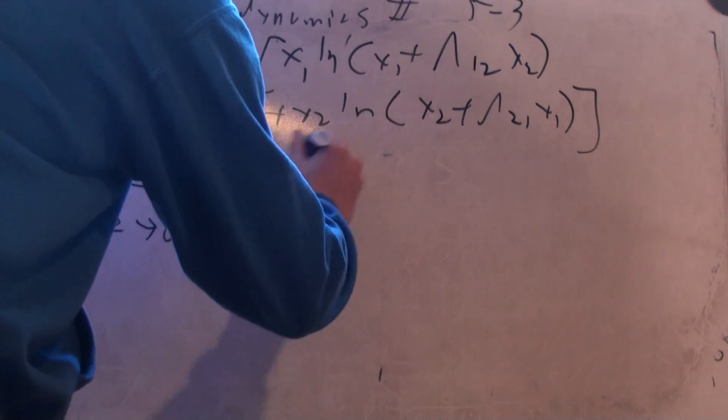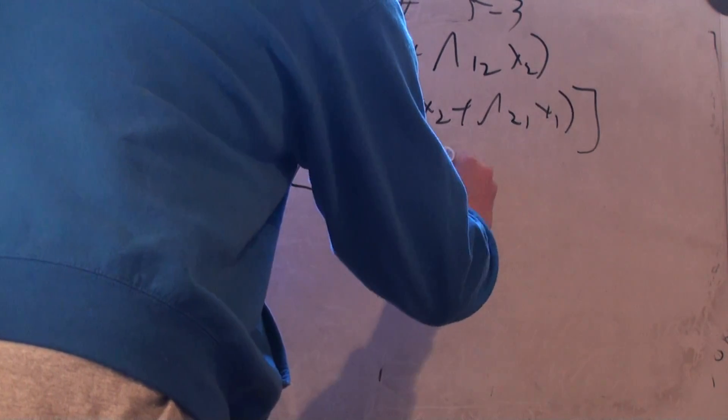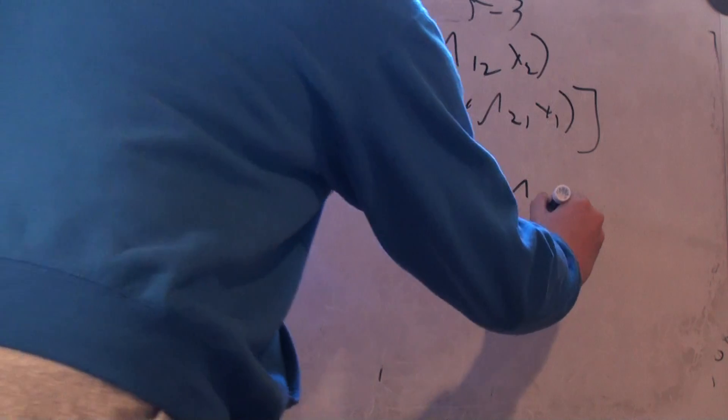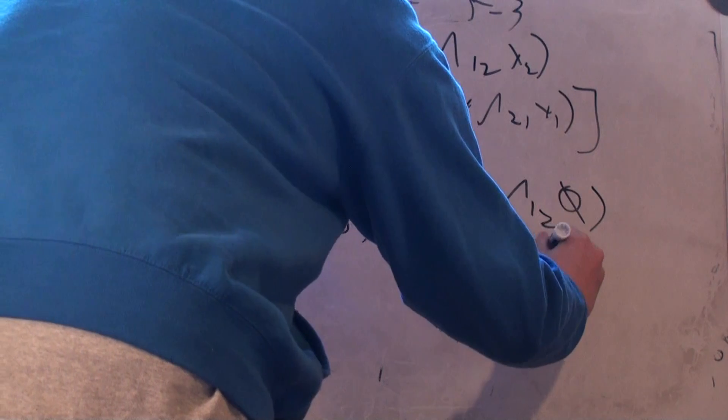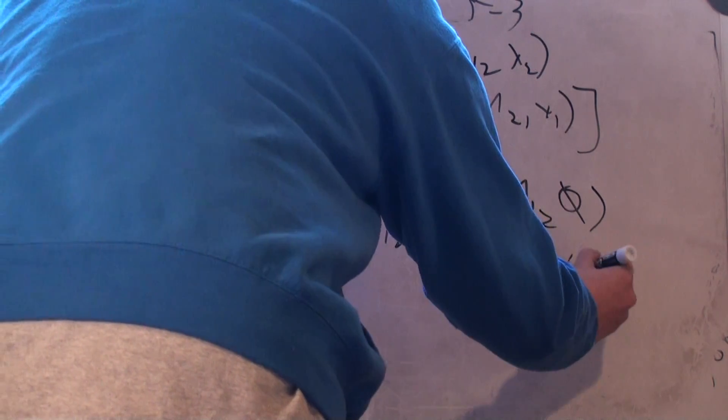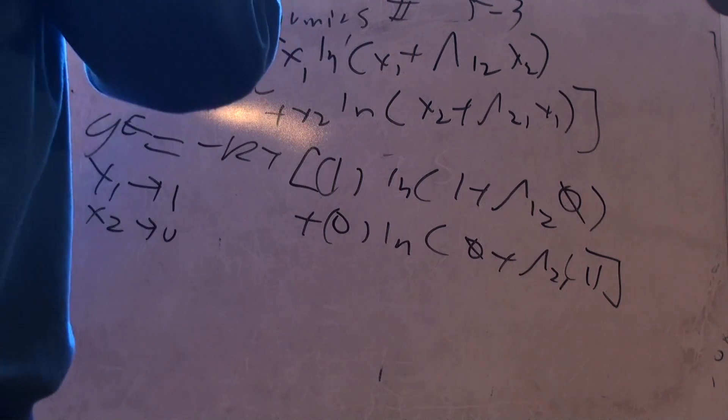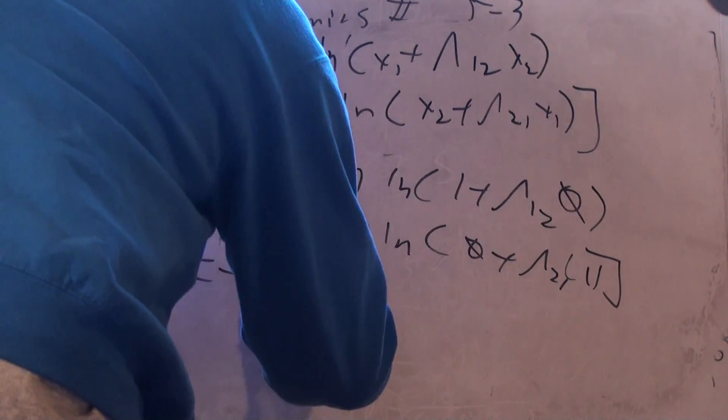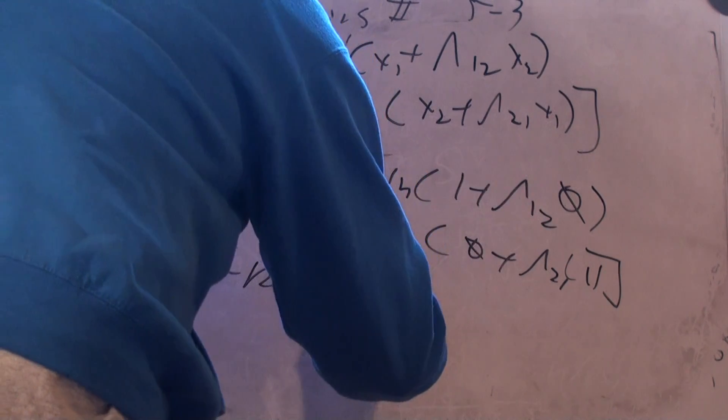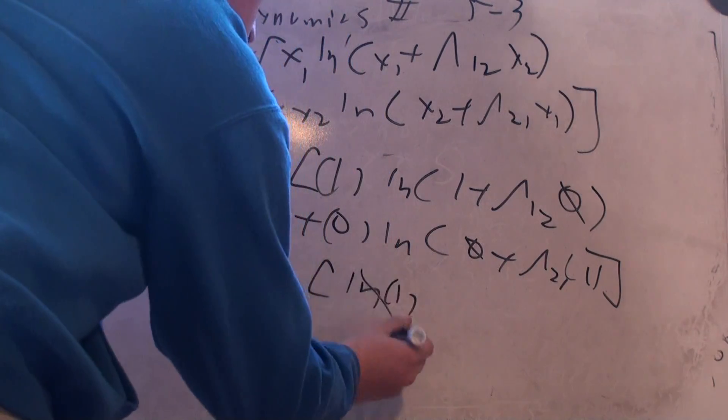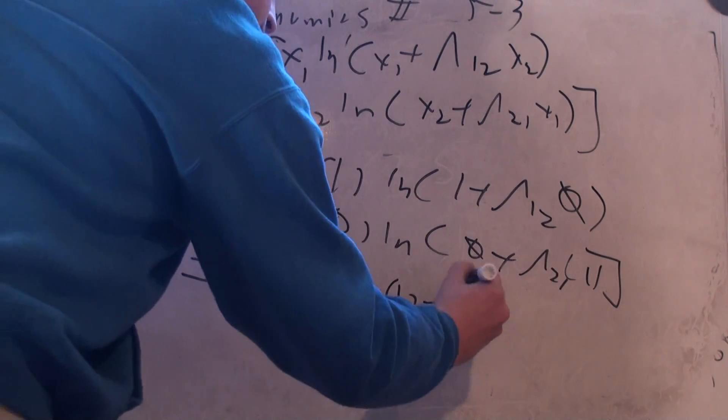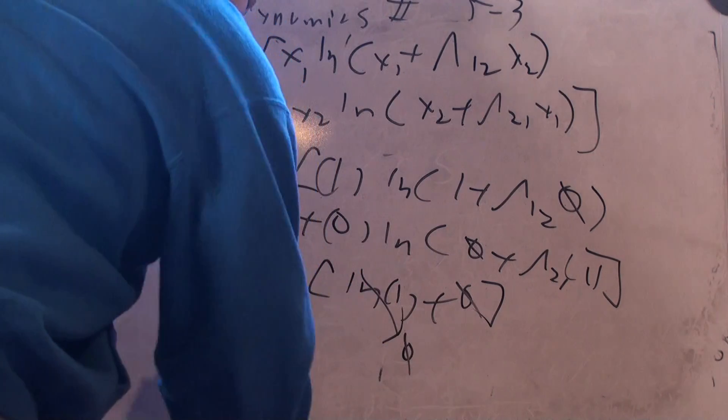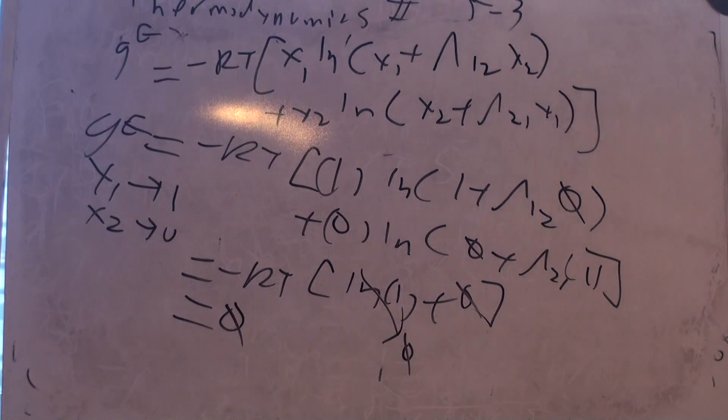Minus RT. So I've got 1 times natural log of 1 plus lambda 1,2 times 0, plus 0 times natural log of 0 plus lambda 2,1 times 1. Well, that leaves me minus RT natural log of 1. What's the natural log of 1? That's right, 0. And then I have 0 times whatever's left, so I have plus 0. It doesn't matter what that is. And 0 plus 0 times minus RT is equal to 0. Yay! So that's half of it.